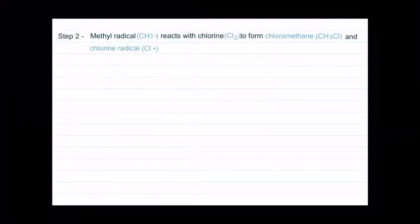Step 2: Methyl radical, CH3, reacts with chlorine, Cl2, to form chloromethane, CH3Cl, and chlorine radical, Cl.